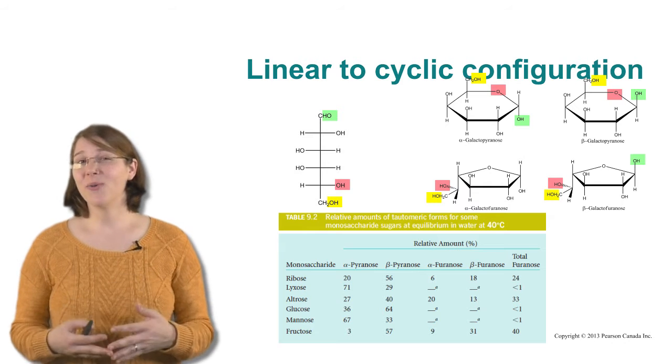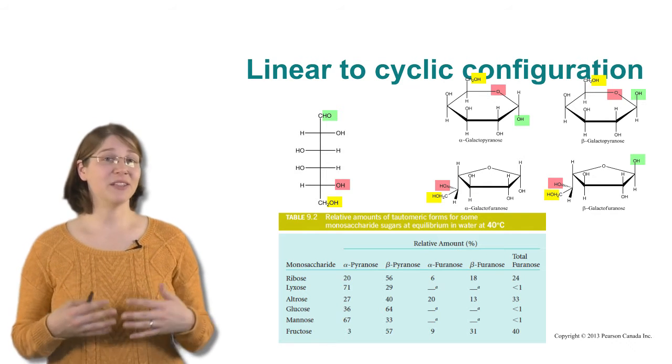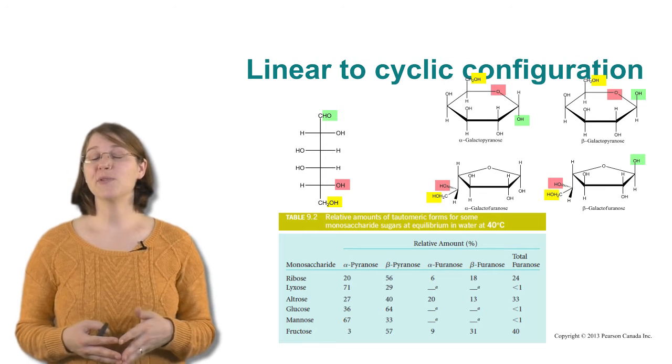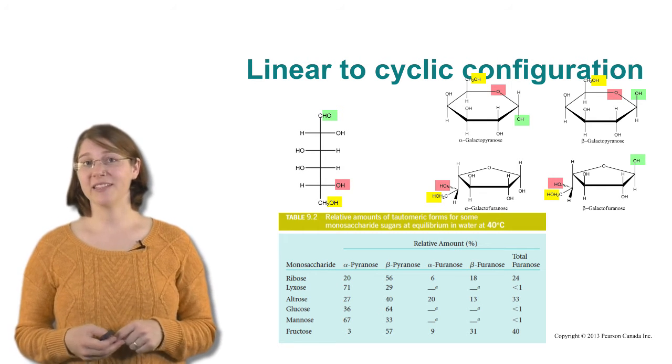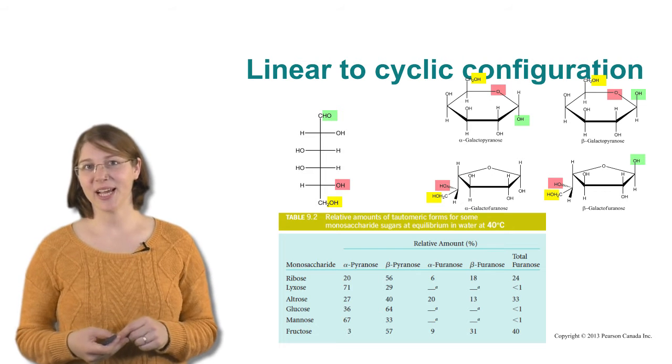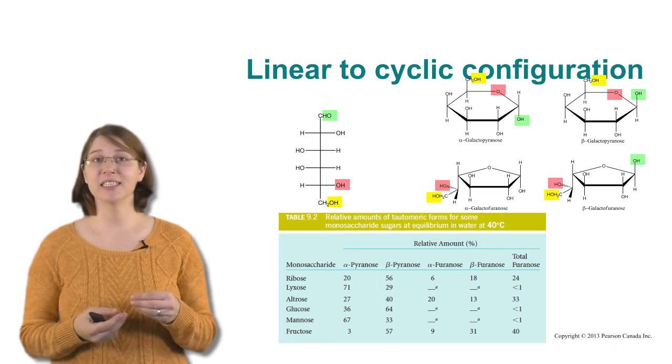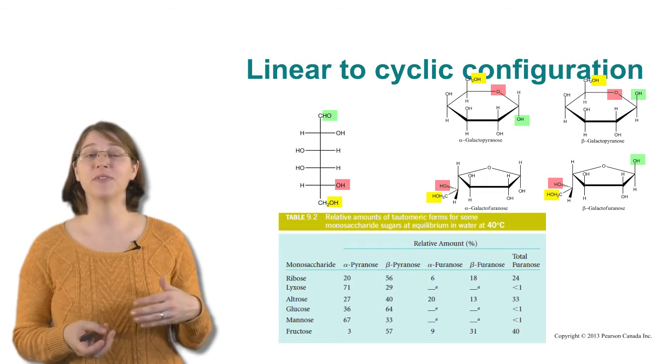These sugars are not always linear. In fact, they're very infrequently linear in the body. So ribose in the body is only in its linear form about 0.9% of the time. The rest of the time, it either folds up into a six-membered ring or into a five-membered ring.